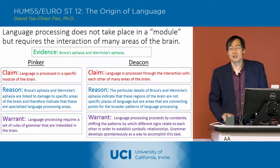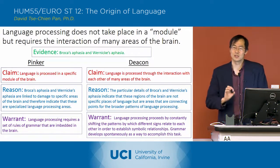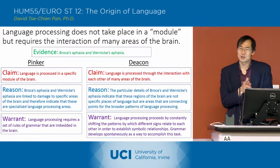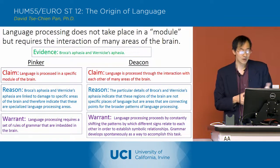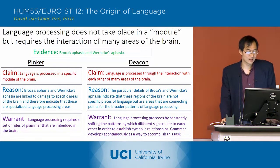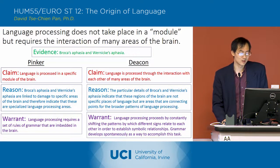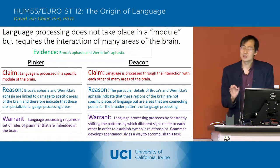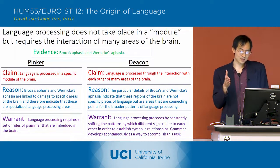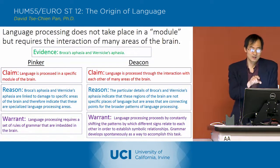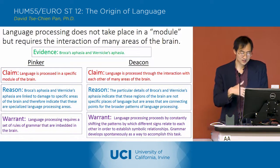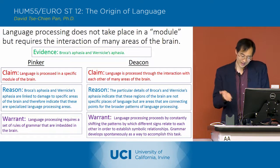To summarize the difference between Deacon and Pinker, they both look at Broca's aphasia and Wernicke's aphasia as evidence for their claims, but they reach different conclusions. Pinker claims that language is processed in a specific module of the brain based on the language deficits resulting from damage to different brain areas. Deacon concludes differently — he says language is processed through the interaction of many different areas of the brain.